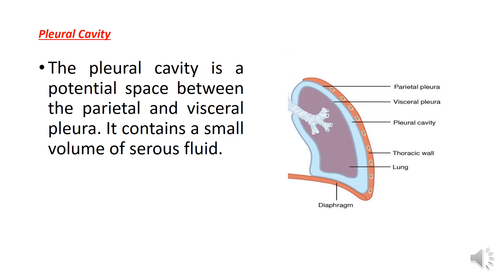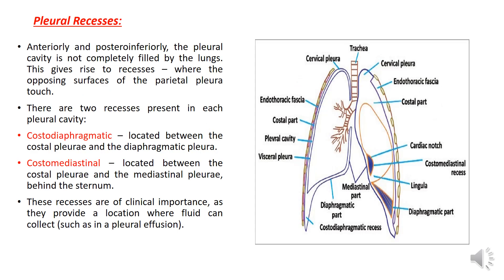The pleural cavity lies between the visceral and parietal parts of the pleura and contains a small thin film of serous fluid. The pleural recesses are parts of the pleural cavity which are only occupied by lung during deep inspiration. We have two recesses: the costomediastinal and costodiaphragmatic. The costomediastinal recess lies anteriorly at the junction of the costal and mediastinal parts of the parietal pleura, while the costodiaphragmatic recess lies inferiorly at the junction of the diaphragmatic and costal parts of the parietal pleura.